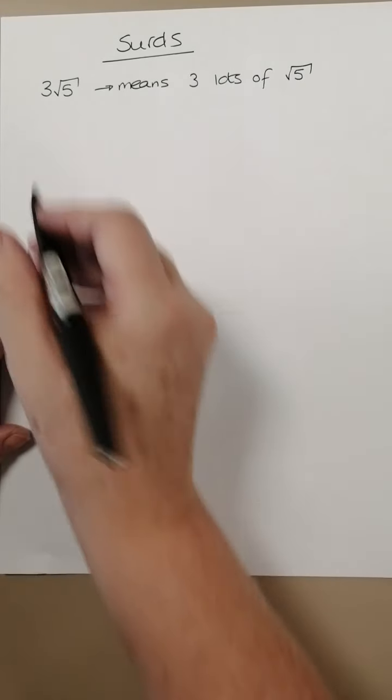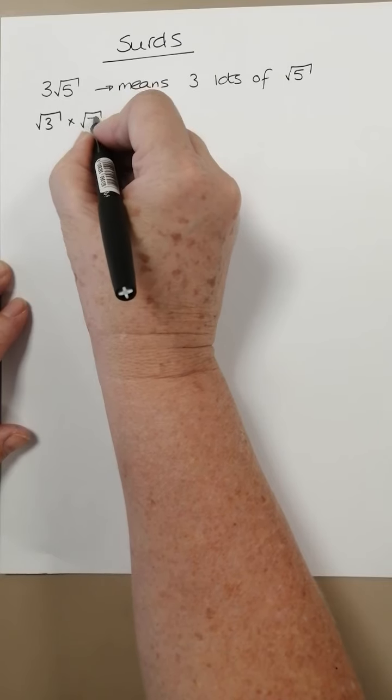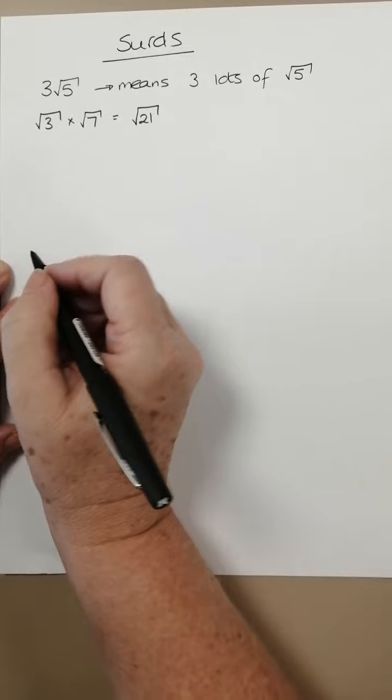When we multiply surds together, so if we have root 3 times root 7, we can write that more simply as root 21.